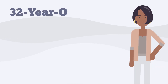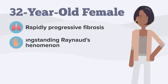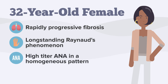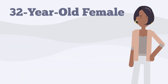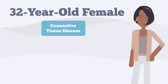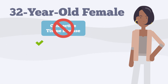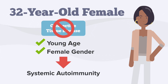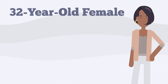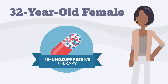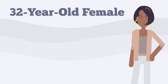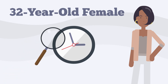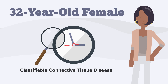Consider a 32-year-old woman with rapidly progressive fibrosis, a long-standing history of Raynaud's phenomenon, and a high-titer ANA in a homogeneous pattern. She was seen by a rheumatologist and does not meet criteria for a classifiable connective tissue disease, but there are certainly features in her case, including her young age and female gender, that would suggest systemic autoimmunity is playing a role. Because she has rapidly progressive disease, she was started on immunosuppressive therapy rather than antifibrotic therapy. Like our 67-year-old gentleman, she should be monitored closely over time for the development of a classifiable connective tissue disease.